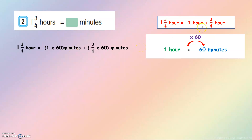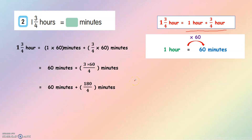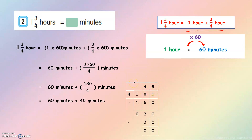1 times 60 plus 3 over 4 times 60. That gives 60 minutes plus 3 times 60 over 4, which is 180 divided by 4, equaling 45. So 60 minutes plus 45 minutes equals 105 minutes.